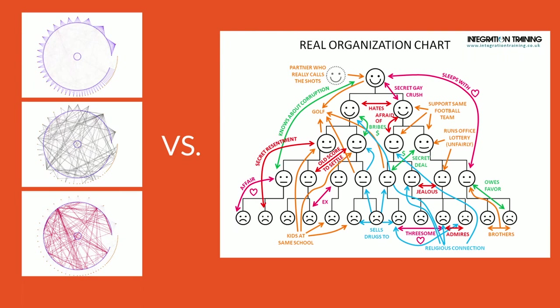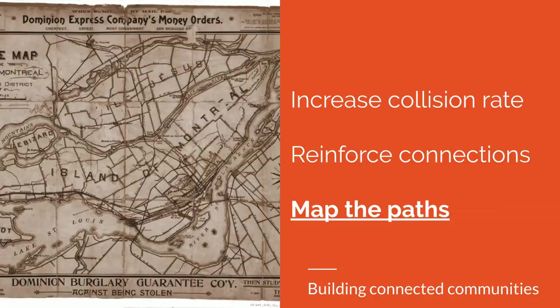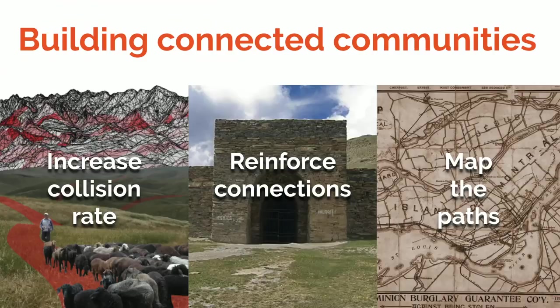So to reiterate the three things we've gone through: the idea is to increase collision rate, then reinforce those connections, and then map out those paths.